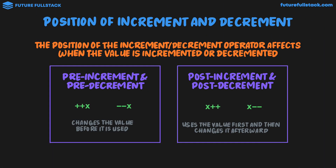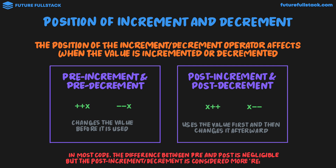This might seem confusing, and the obvious question is which one should you use. In most code, the difference between pre and post is negligible, but post-increment and post-decrement is considered more readable. Throughout this course, I'm going to be using the post-increment and decrement notation, as it's a bit cleaner to look at and makes more intuitive sense — we have the value x and are incrementing or decrementing it by 1.